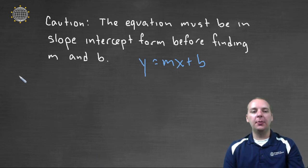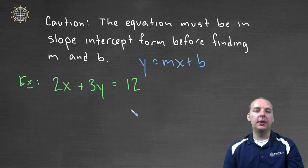So let me show you one example. Let's say you had 2x plus 3y equals 12 or something like that.